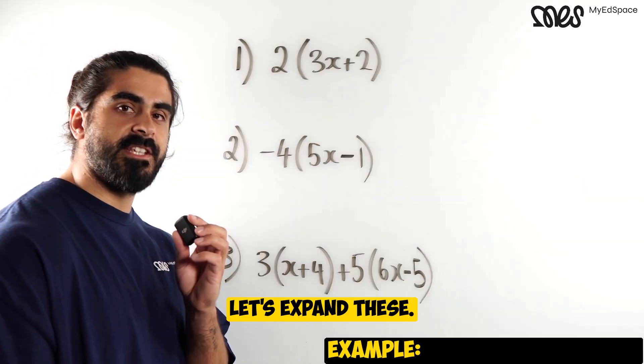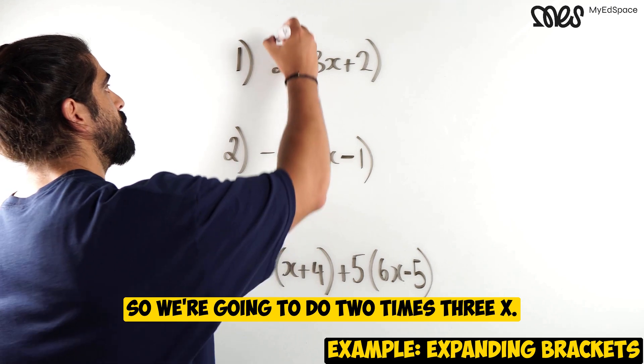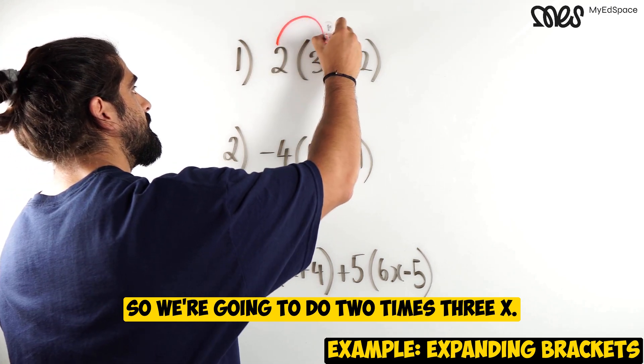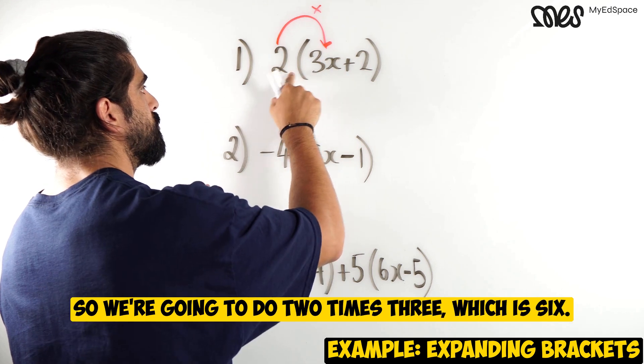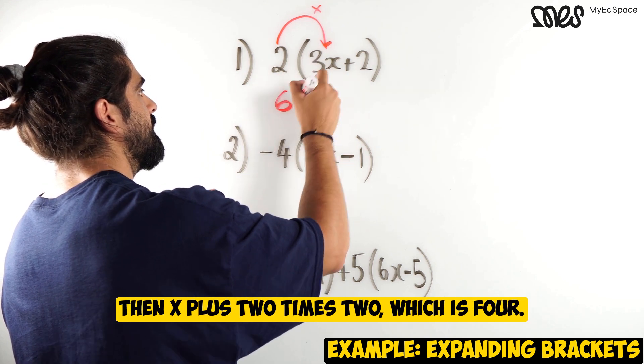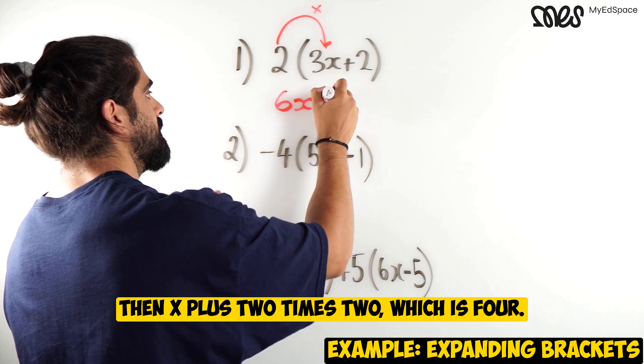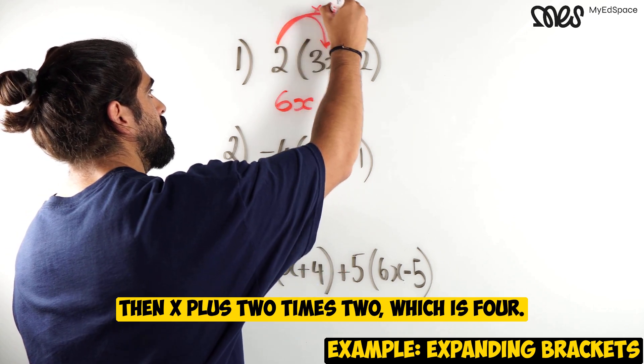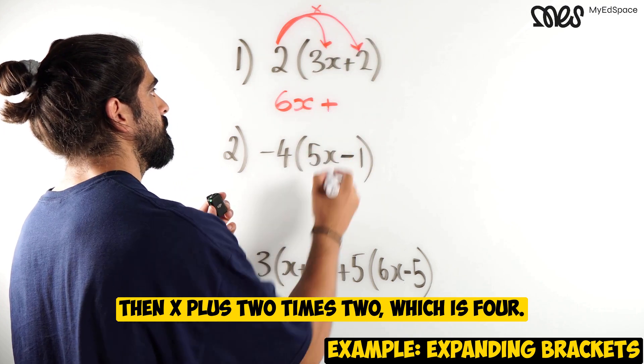Let's practice some examples. Let's expand these. So we're going to do 2 times 3x. So we're going to do 2 times 3 which is 6. Then we're going to do 2 times 3x plus 2 times 2 which is 4.